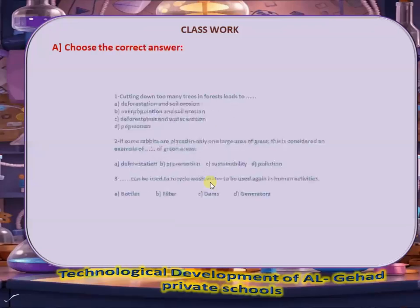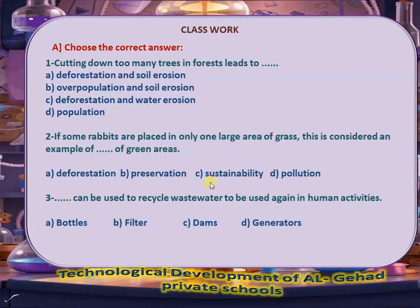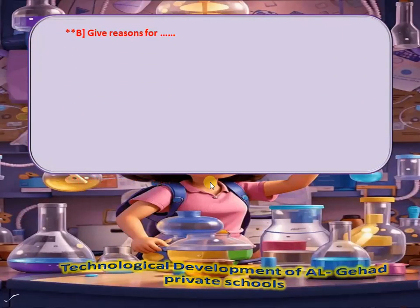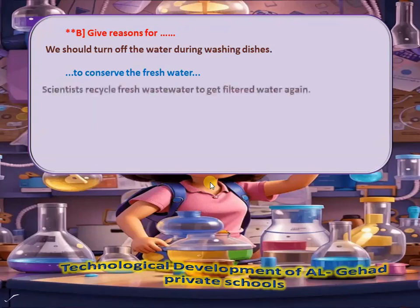The correct answers: 1. Cutting down too many trees in forests leads to deforestation and soil erosion. 2. If some rabbits are placed in only one large area of grass, this is considered an example of sustainability. 3. A filter can be used to recycle waste water to be used again in human activities. We should turn off the water during washing dishes to conserve fresh water. Scientists try to recycle fresh waste water to get filtered water again.